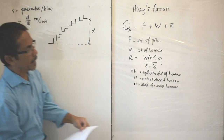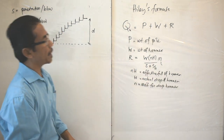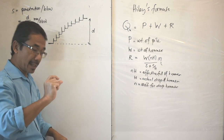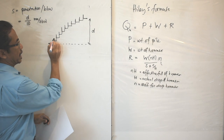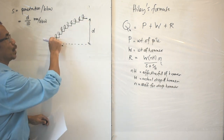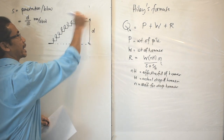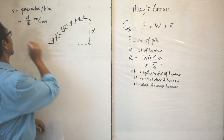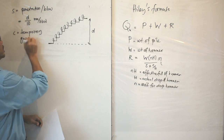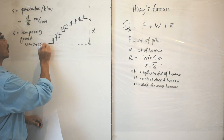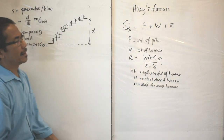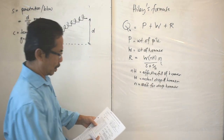Next is c, the temporary compression. When the pile is hit it goes in a little and then bounces back — this temporary compression is indicated by the sharp peaks on the graph. You measure each peak height and take the average. c is the temporary ground compression.